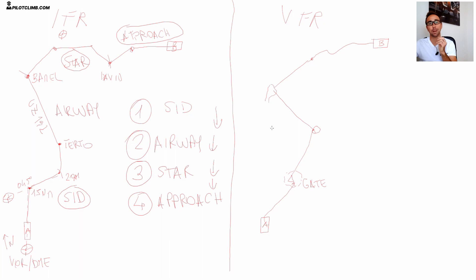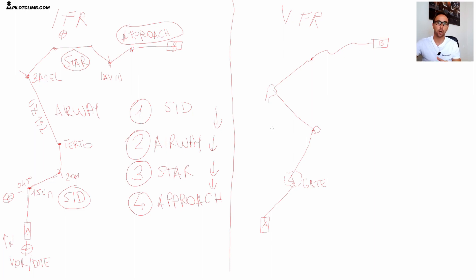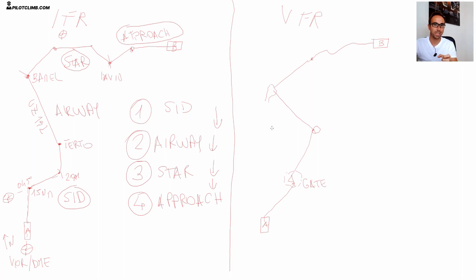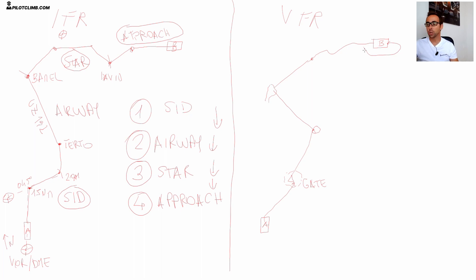That's why they are called visual flight routes - because you base your navigation visually, looking outside. You base your navigation on cities, on lakes, on coastlines. If you have to fly from A to B and both the departure and destination aerodromes are on the coastline, then you simply follow the coastline to reach your destination. When you get close to your destination, you can either approach and land straight in, or you join the VFR traffic pattern - the downwind, base leg, and then land.